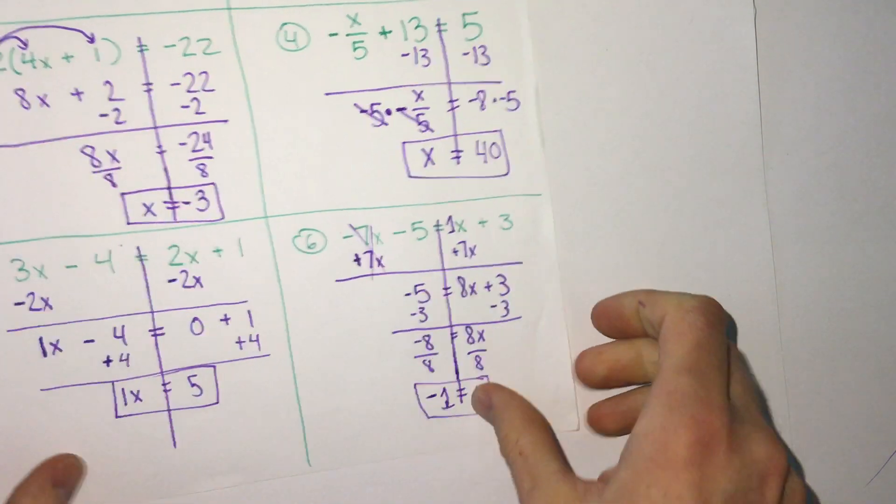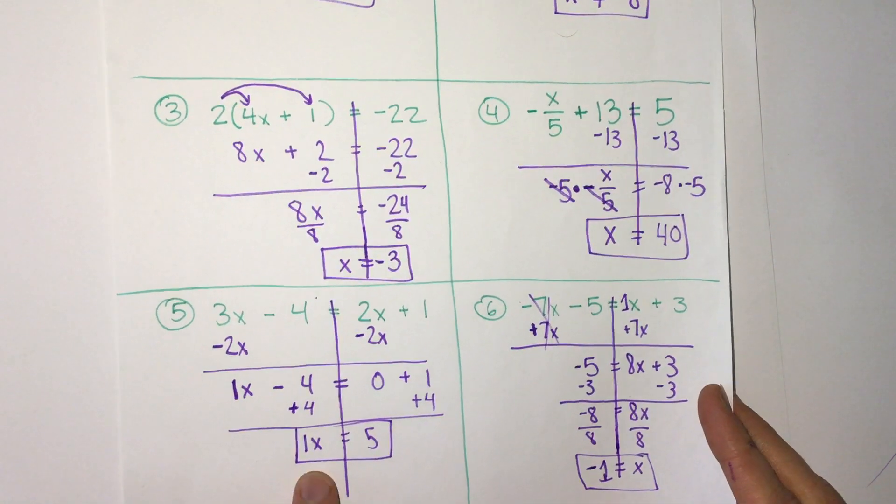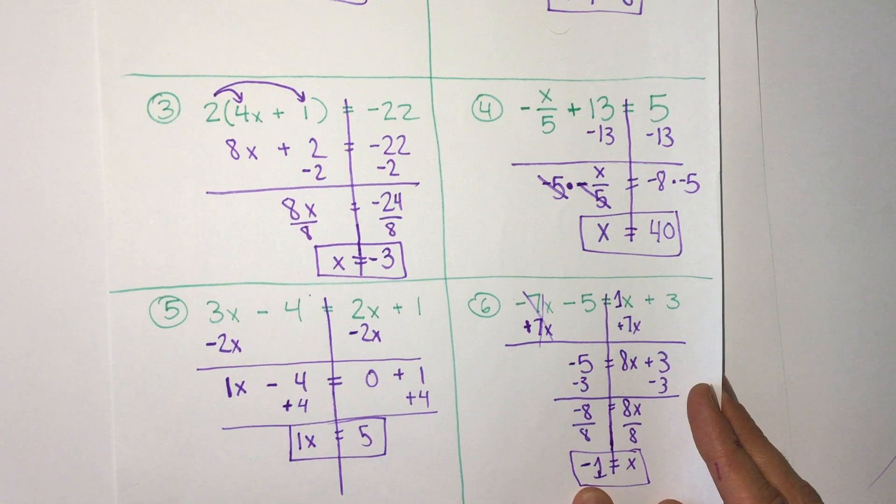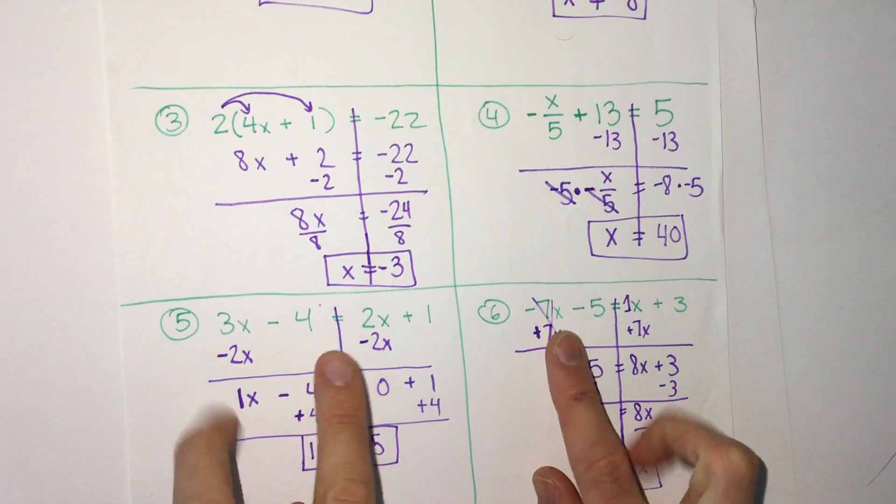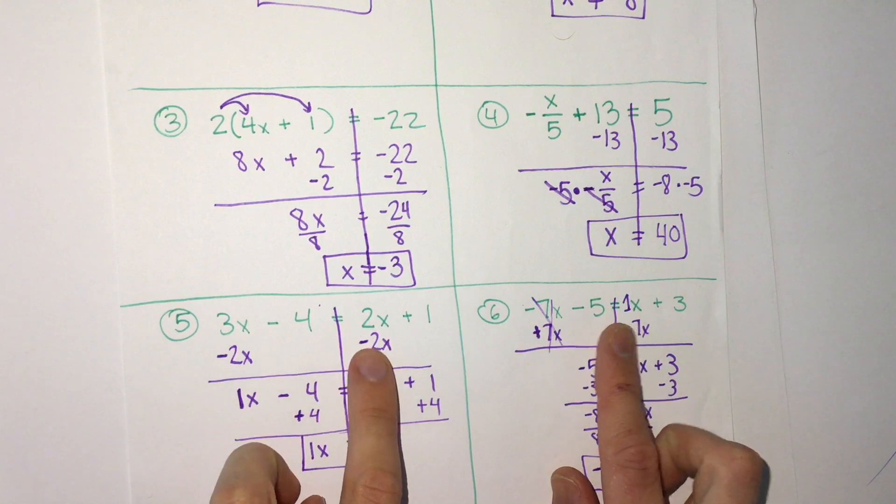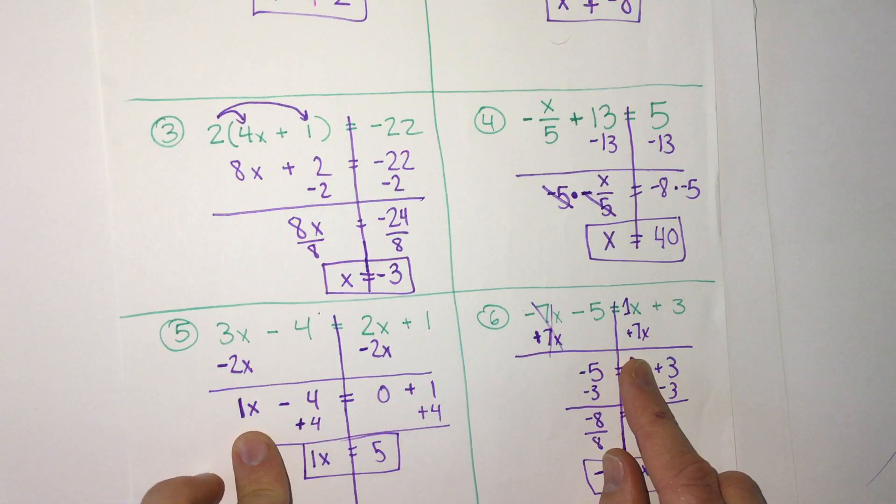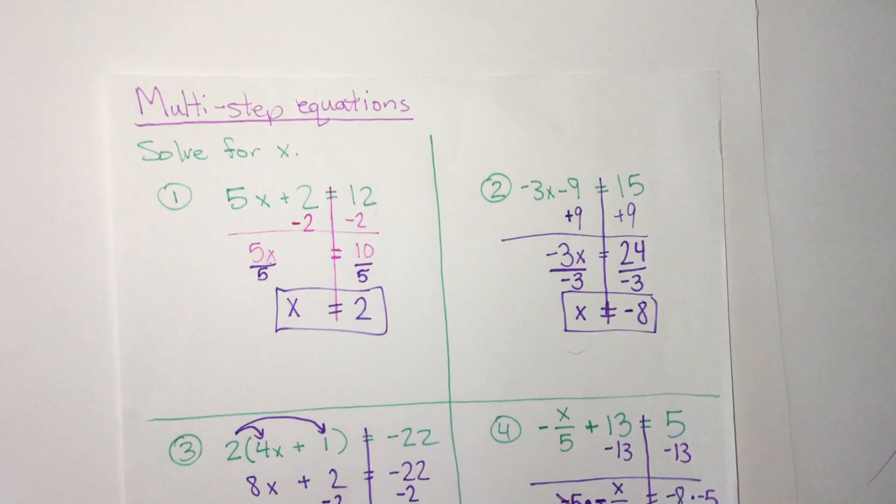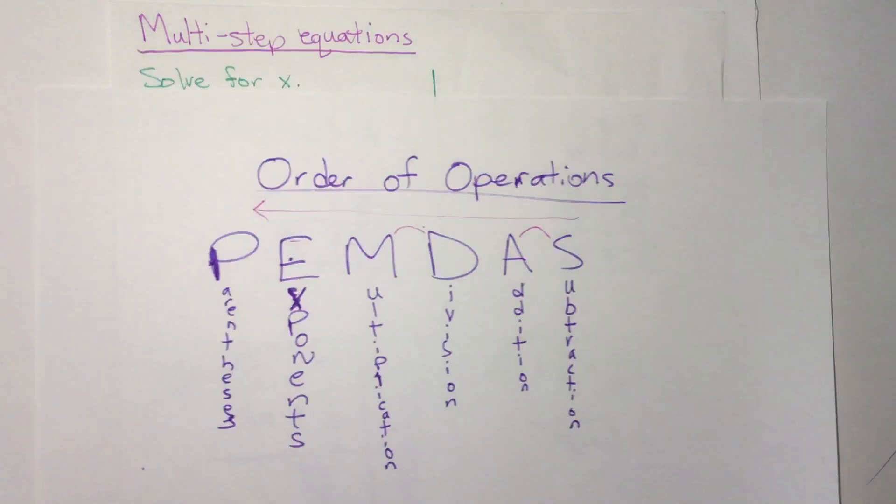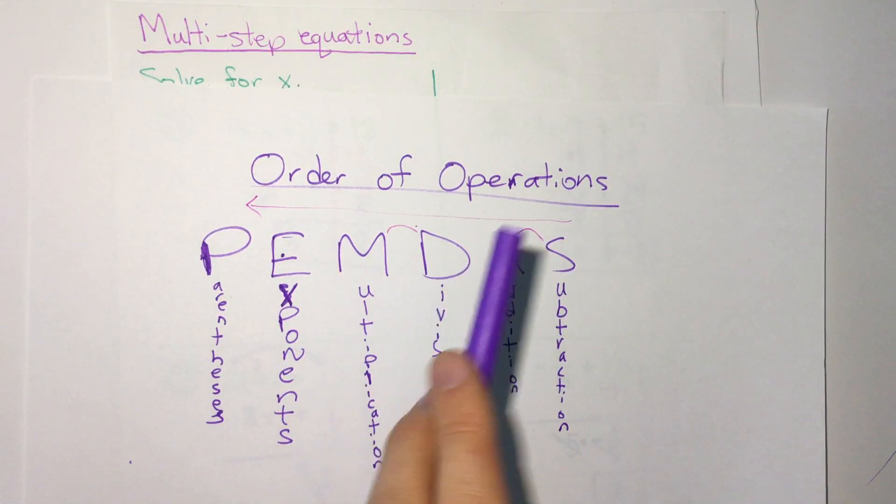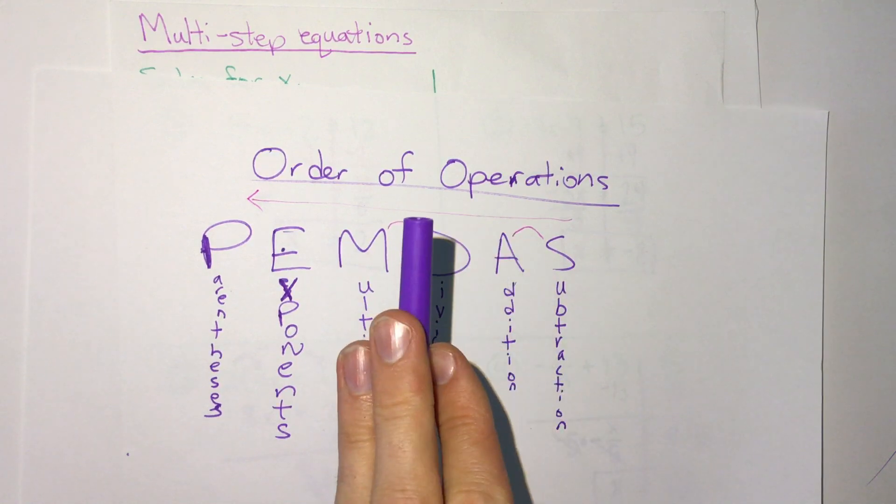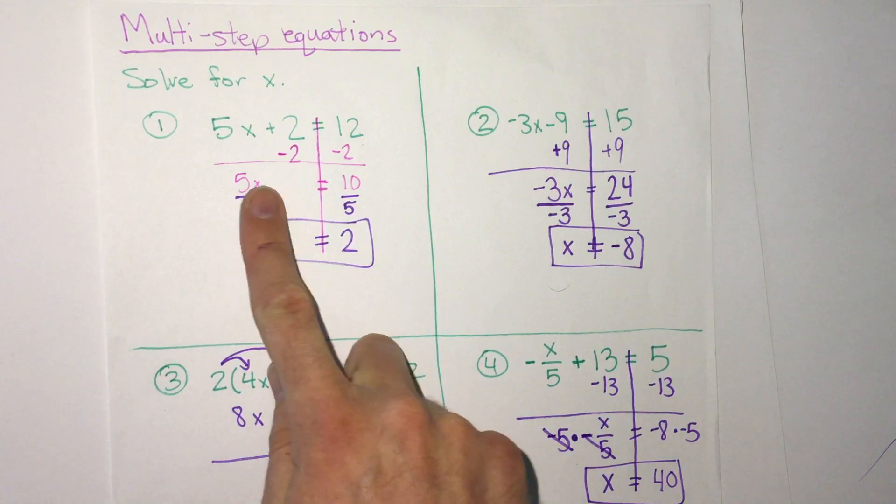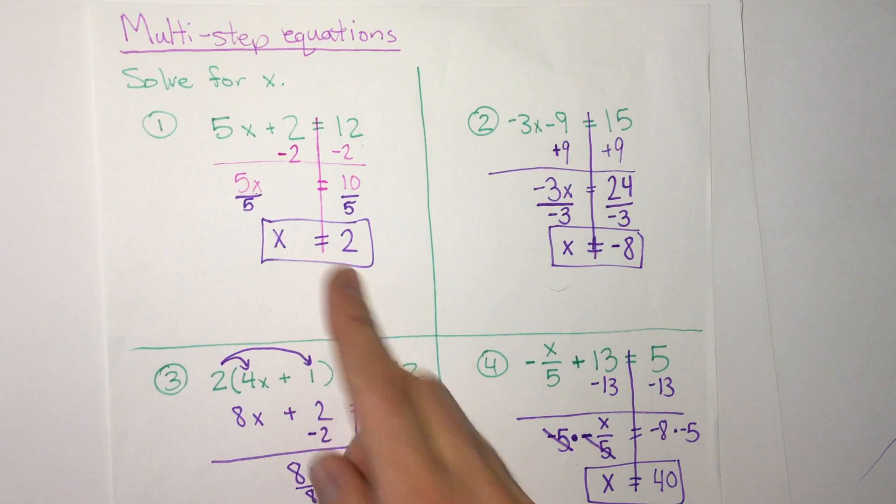So no matter what your algebra problem is, our goal is to get x to be alone on one side of the equation and all the numbers to be on the other side of the equation. So if that means you have x's on both sides, it means you want to get x's to one side of the equation and then move all the numbers to the other side. And if x is already on one side, then you want to follow our algebraic order of operations going backwards, moving addition and subtraction, then moving multiplication and division. And by doing that, if we follow that, we get x by itself on one side and get our answer.